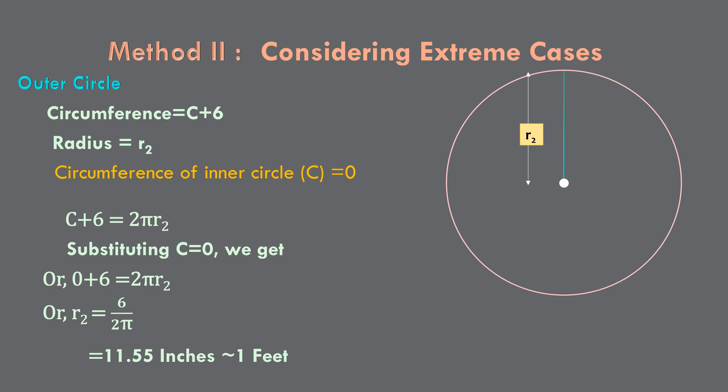Now, from what we did today, we must understand that the increase in radius of a circle is not dependent on the initial circumference. What it means is, even if you add 6 feet to a circle with perimeter 1 feet, the result is going to be the same. That is, the new radius is going to increase by 11.5 inches or nearly 1 feet as in the previous case.